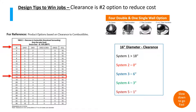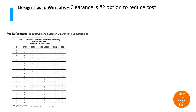In this practice exercise we're going to use a 16 inch diameter and determine the clearance from the outer wall of the duct to the combustible. The first system has a clearance to combustible of 18 inches, so that's going to be our DCL product. At zero clearance, System 2 is going to be the DIS 3Z product, and then your 6 inch, 3 inch, and 1 inch clearance options.